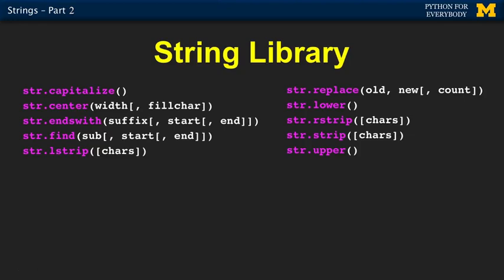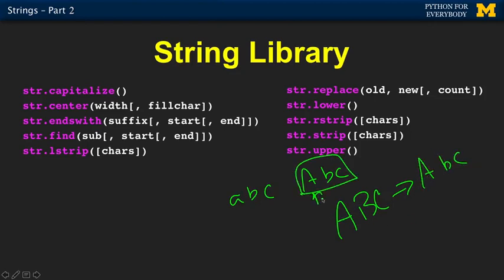Capitalize takes a string like a b c and makes the first letter A B C. Or you could even have A B C as input, and then output makes A B C. Capitalize. Whenever it's done, the first letter's capitalized. That's what capitalized does. Why you want to do that? Whatever, it's already built in. You could write a for loop to do that, but it's already built in.